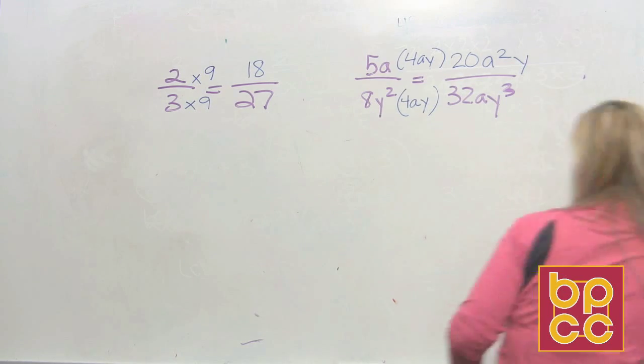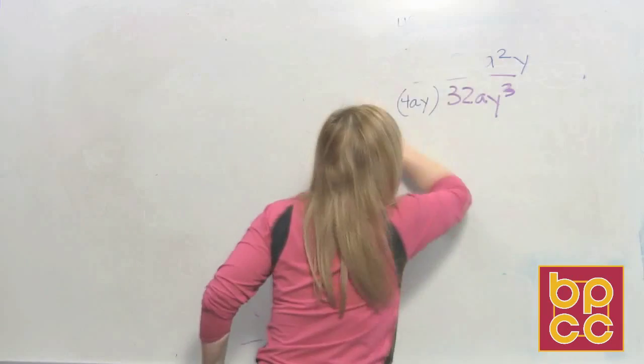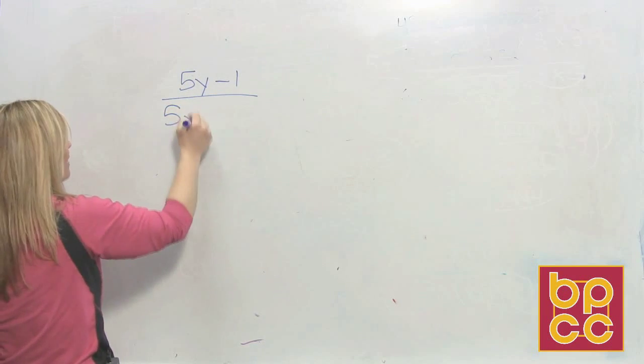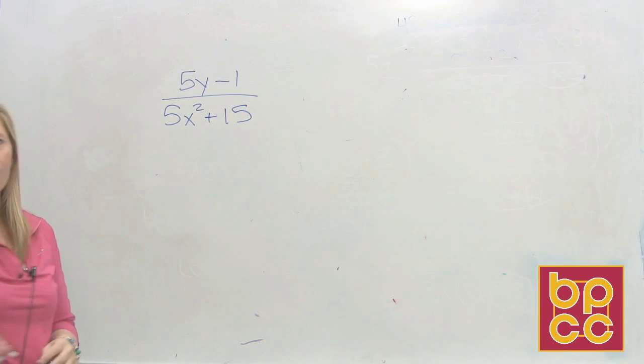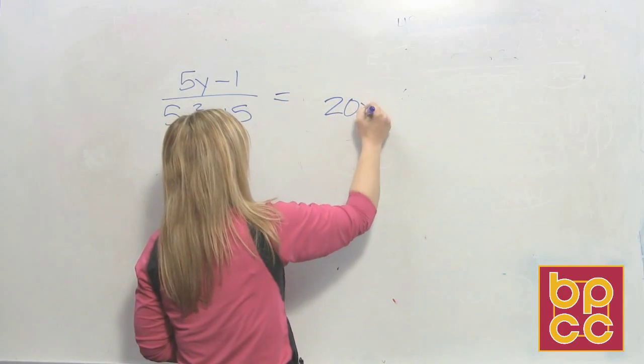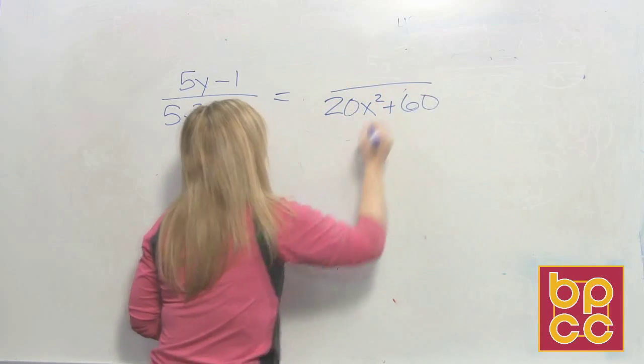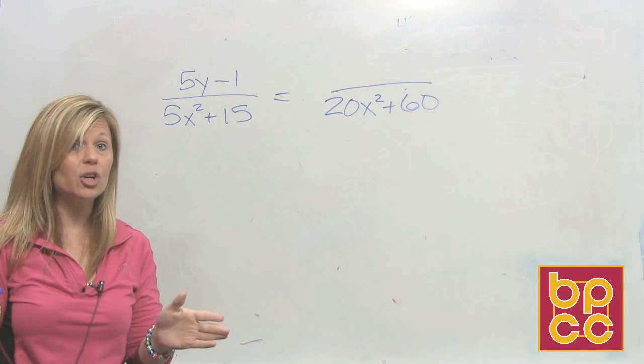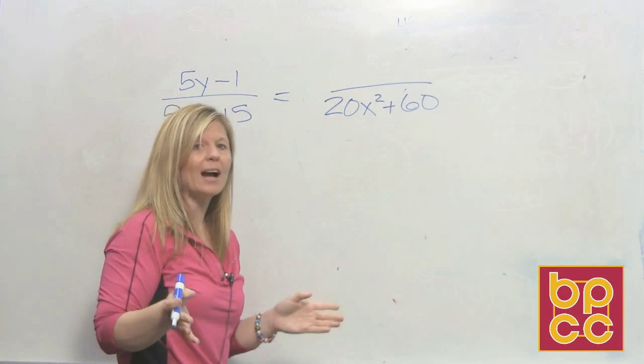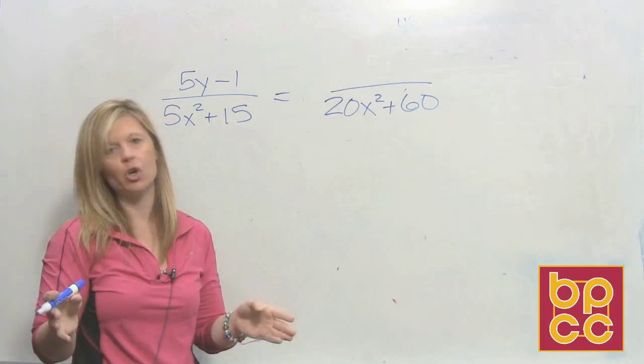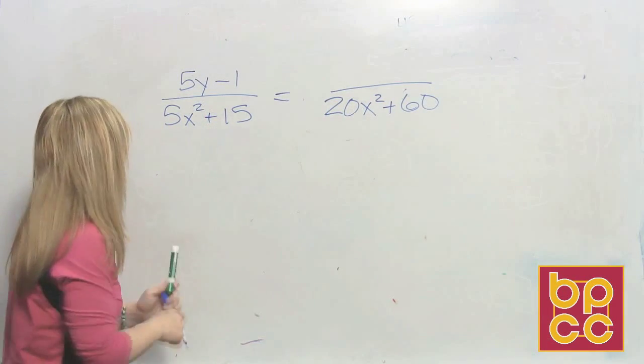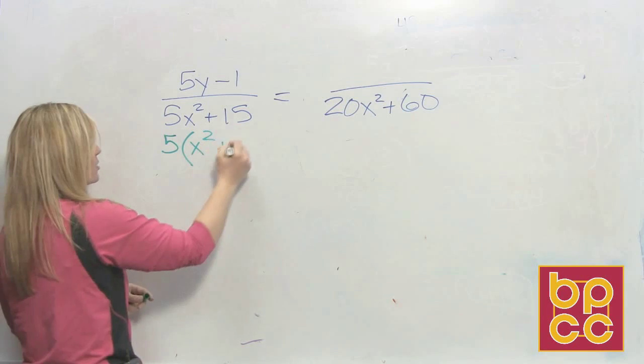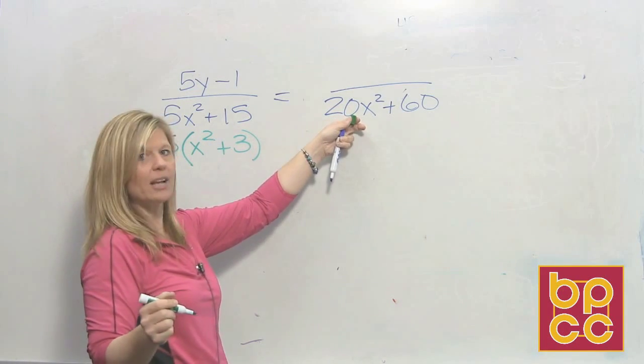Let's go to the last example of equivalent fractions in your notes. I have the fraction five y minus one over five x-squared plus fifteen, and I want to make an equivalent fraction that's going to have the denominator twenty x-squared plus sixty. Now I know some of you could look here and figure out what we multiplied by to get here, but to make it even easier, we discussed this already. To work with fractions, you want your denominators always to be in lowest terms. So one of the things we could do is factor this denominator. It has a GCF of five, and that would leave us with x-squared plus three. Then if we factor this denominator, its GCF, we could divide both of these by twenty, and that would leave us with x-squared plus three.